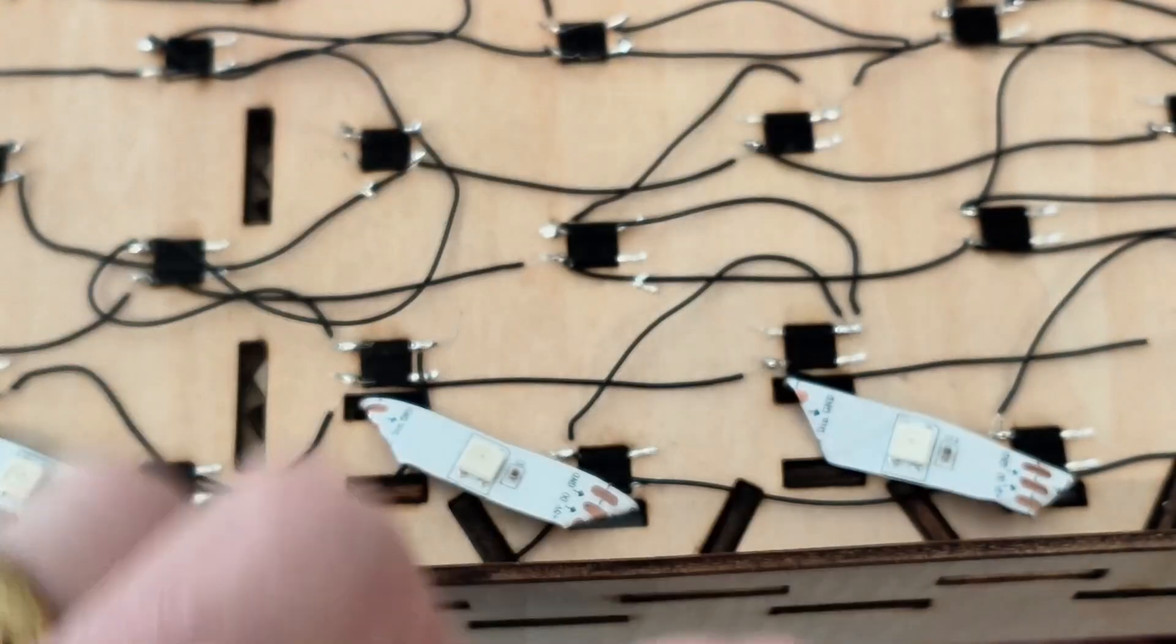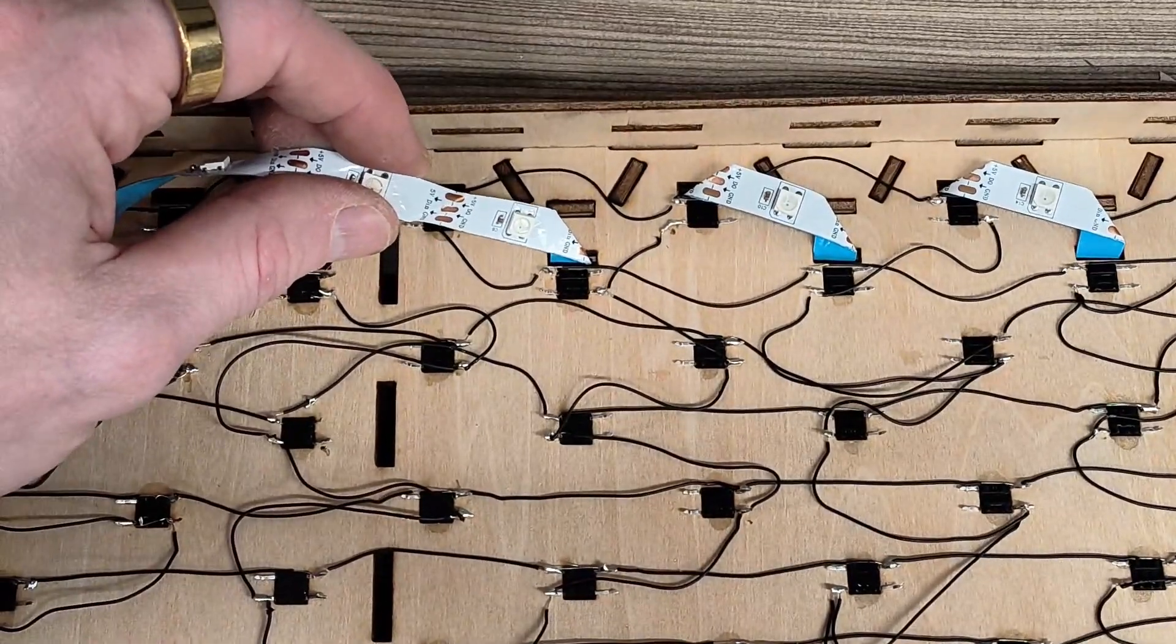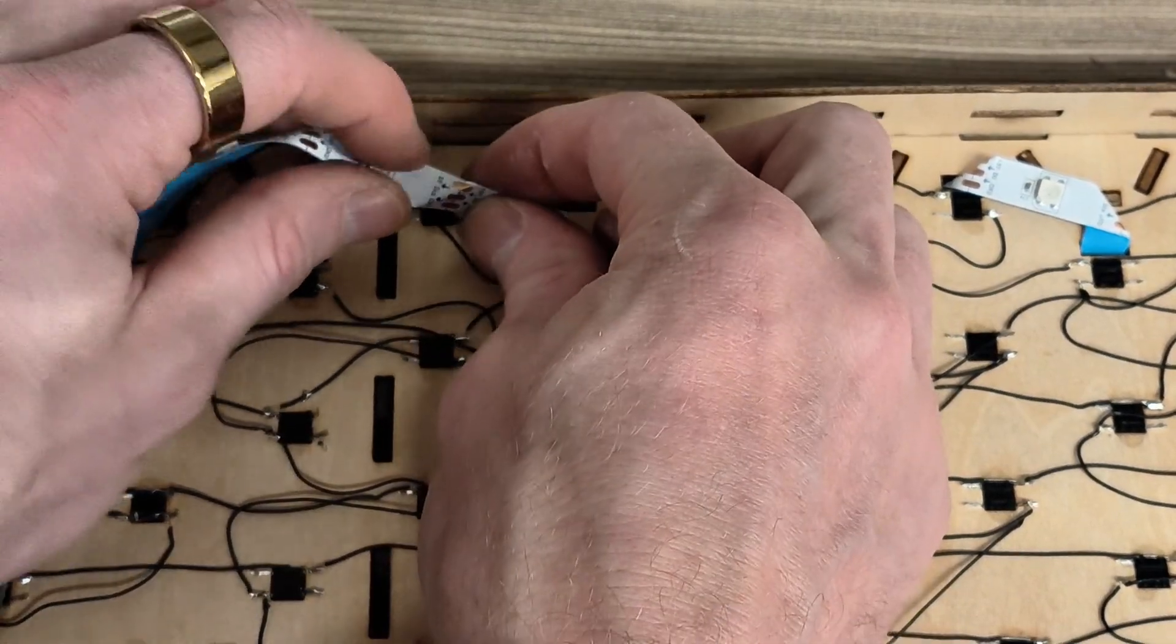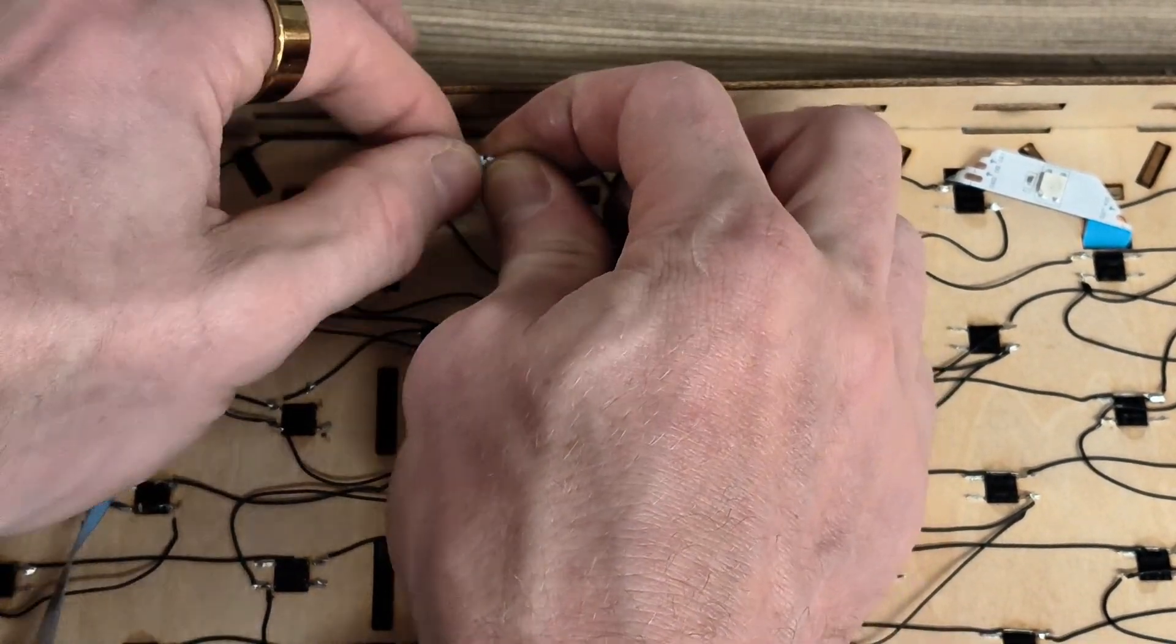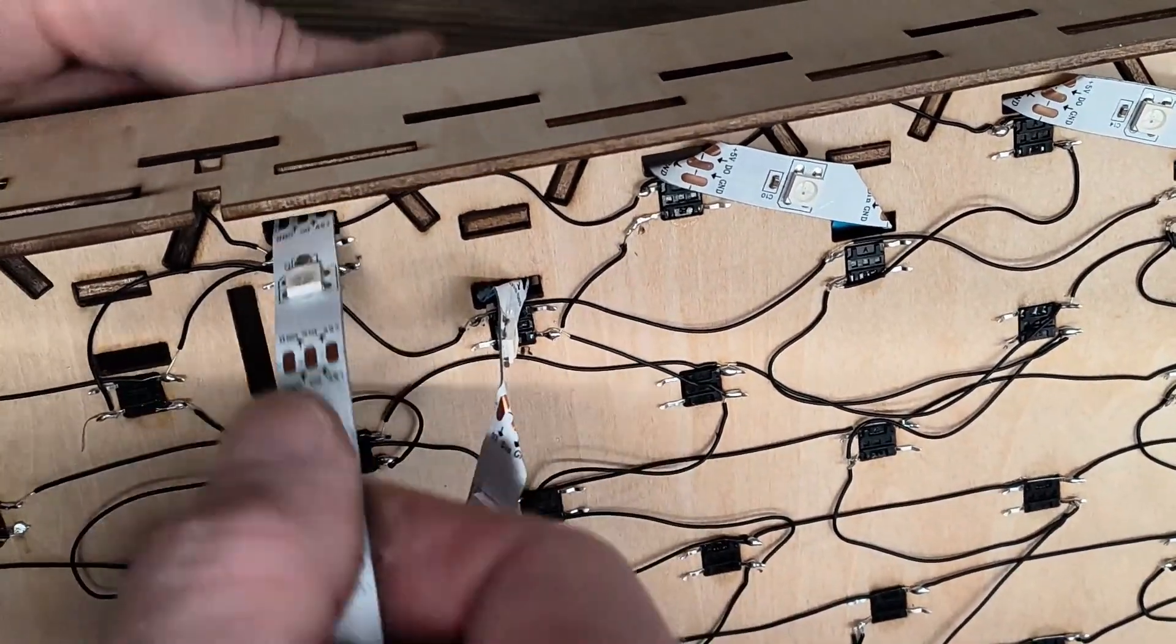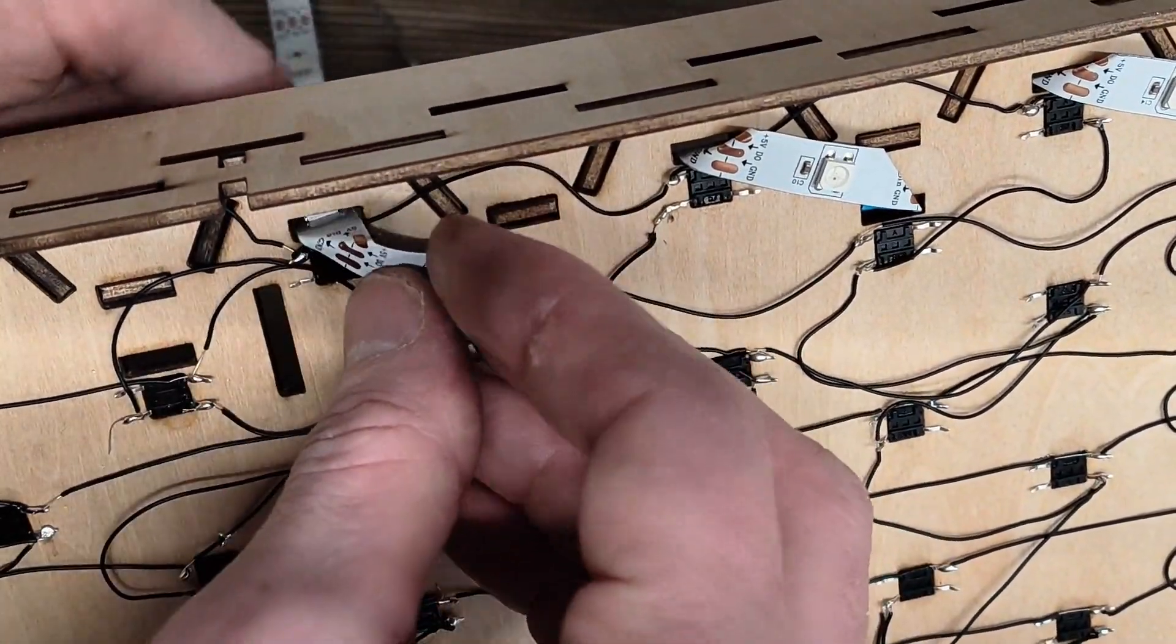And then it's the same procedure at the top. When you get up at the top row, you want to bend it as a 45 degree angle and then bend it again. And it should look like that.